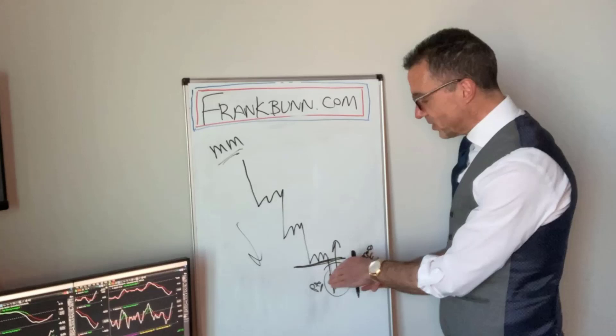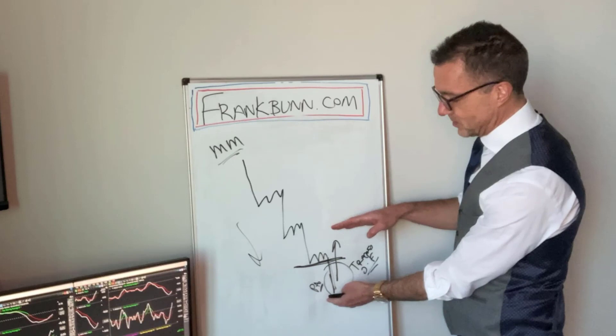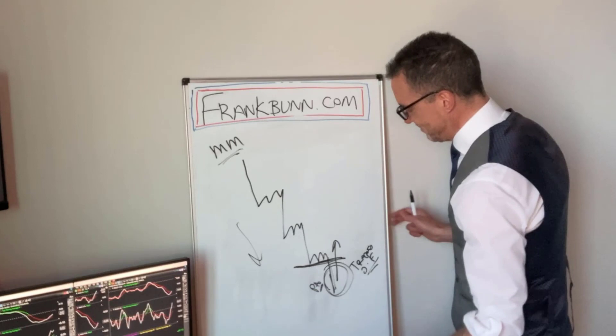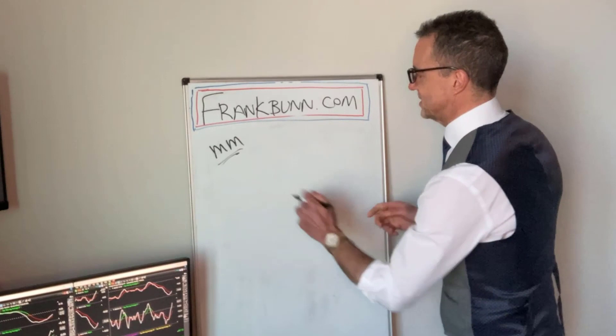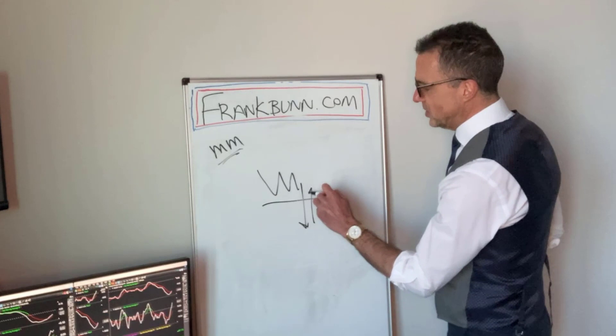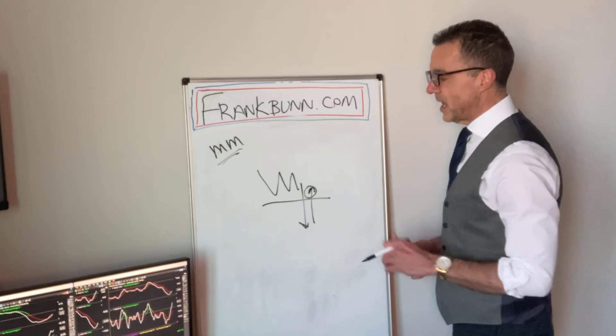The significance of trapped order flow is that we have this invested order flow — sellers' short positions — that are quickly going to incur loss when this reverses. What we're going to do is use this dynamic to set up a structure that we can exploit. Here's our level where price has broken down, and we're going to use this reversal to establish a low risk entry.